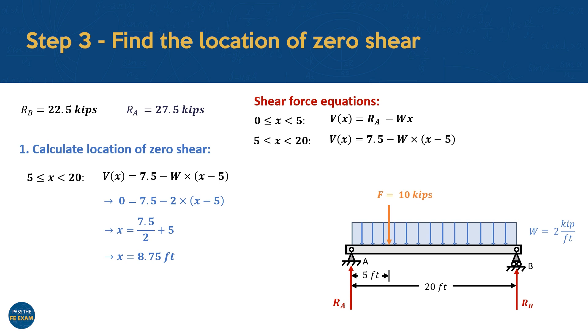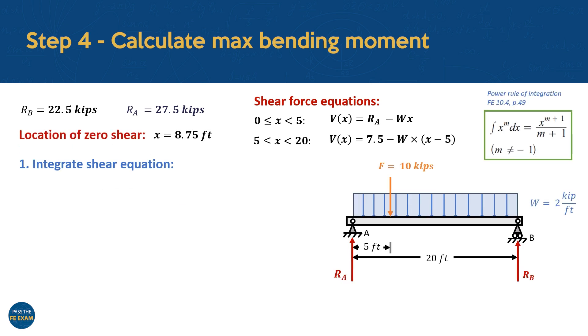Next, to find the value of the bending moment at this location, we'll need to integrate the shear force equations we derived earlier. However, since we have two discrete equations governing the shear in the beam, we'll also have to split this integral in two. We begin with the first section by substituting the shear equation 27.5-2x and we evaluate this integral over the range from 0 to 5 feet. We follow a similar procedure for the second section of the beam, substituting the shear equation as 7.5-2 times (x-5). This integral is evaluated from 5 feet to 8.75 feet, or otherwise, the location where the moment will be at its maximum.